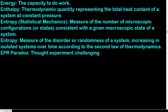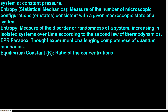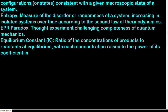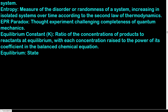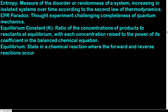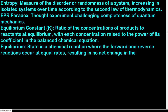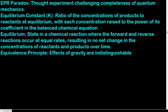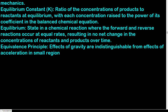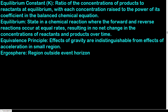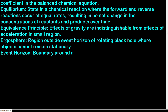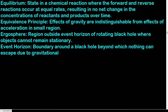EPR paradox: thought experiment challenging the completeness of quantum mechanics. Equilibrium constant (K): ratio of the concentrations of products to reactants at equilibrium, each raised to the power of its coefficient in the balanced chemical equation. Equilibrium: state in a chemical reaction where the forward and reverse reactions occur at equal rates, resulting in no net change in concentrations over time. Equivalence principle: effects of gravity are indistinguishable from effects of acceleration in a small region. Ergosphere: region outside the event horizon of a rotating black hole where objects cannot remain stationary. Event horizon: boundary around a black hole beyond which nothing can escape due to gravitational effects.